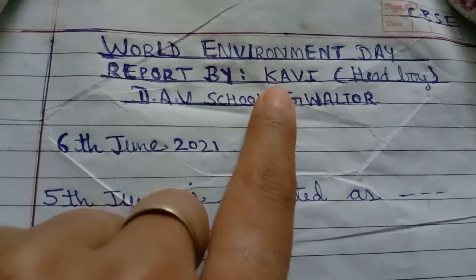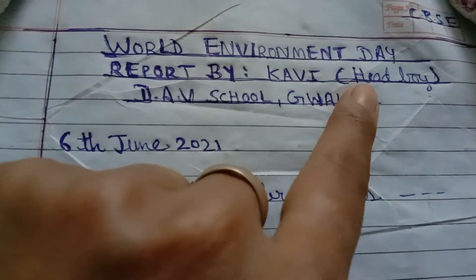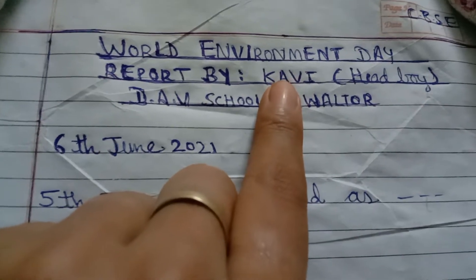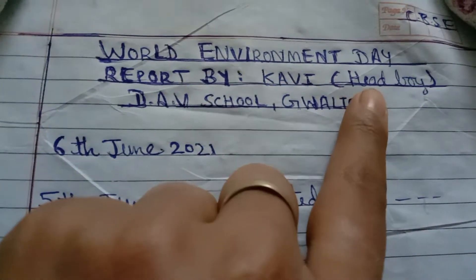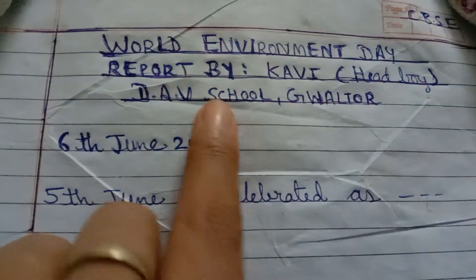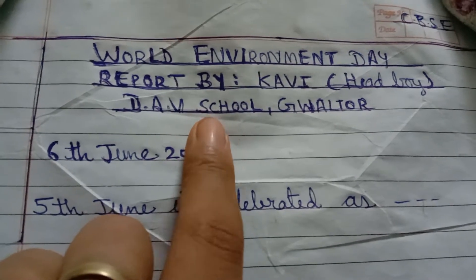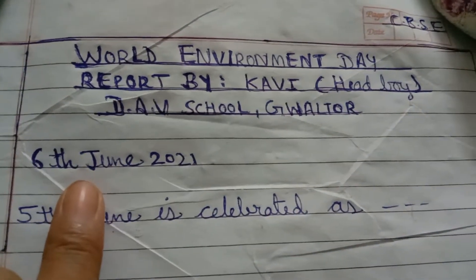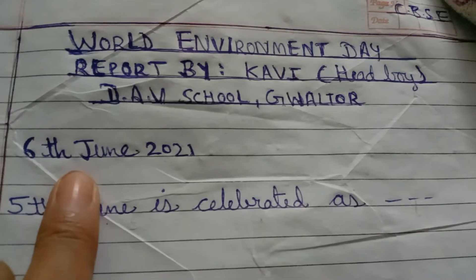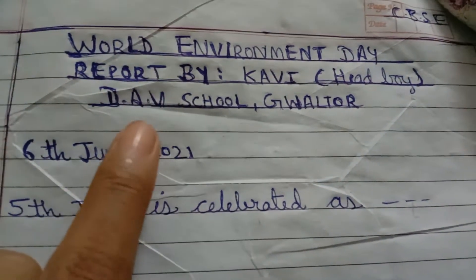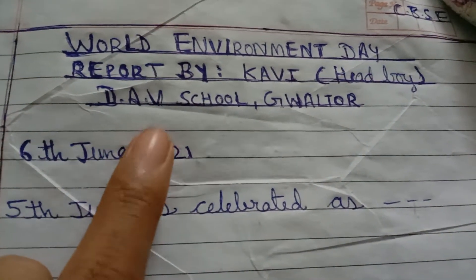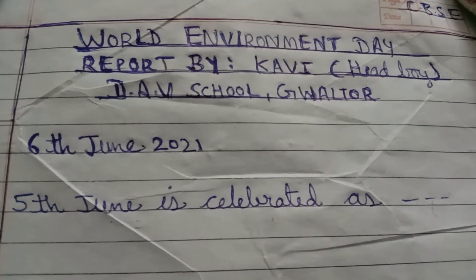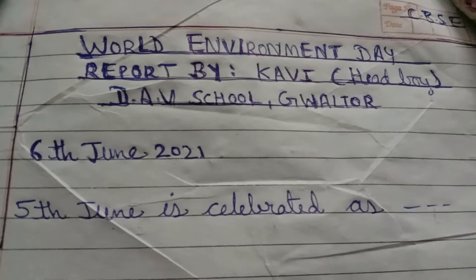Here you write the name — Kavi — and if you are a boy, write 'Kavi' and add your designation, like Head Boy. Then write the name of the person giving the report, their designation, DAV School Gwalior, and the date as given in the exam. This is the CBSE board pattern, and the content below is the same for both boards.